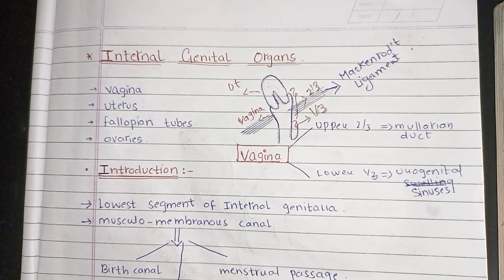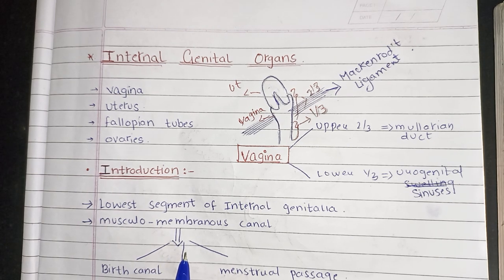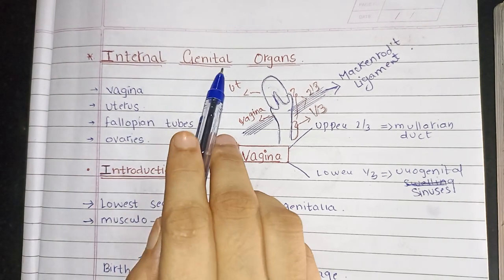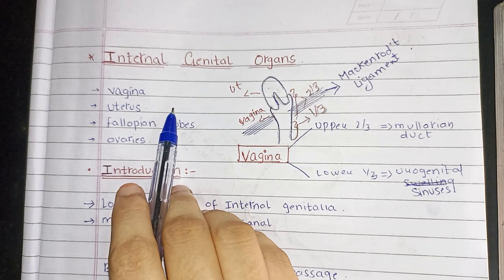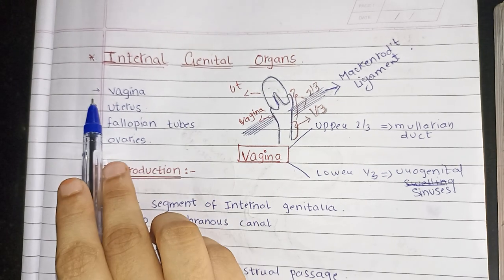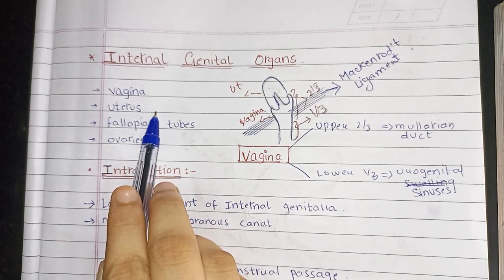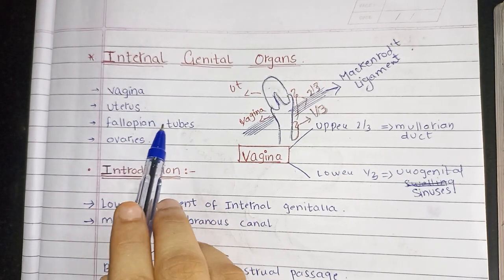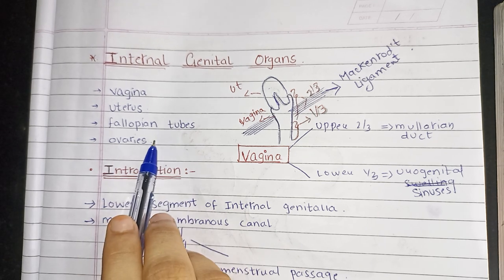Assalamualaikum warahmatullahi wabarakatuh. In this video, we will learn about internal genital organs. There are 4 things in internal genital organs: first one is vagina, second one is uterus, third one is fallopian tubes, and fourth one is ovaries.